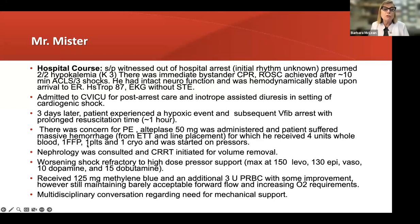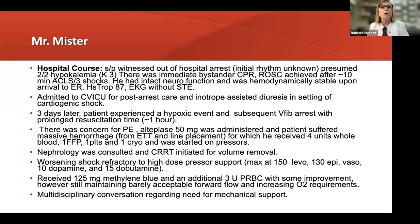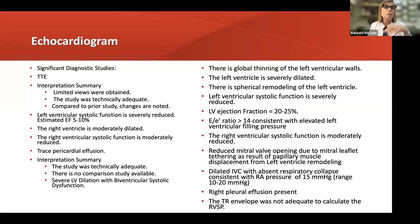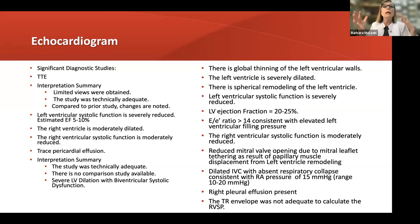There was concern for PE. He was not on vasopressors, was stable and walking around. He got alteplase, and from the alteplase he suffered a massive hemorrhage — hemorrhaging from his ET tube and all line placements. He got four units of whole blood, FFP, platelets, cryo, and was started on pressors. Pressors were titrated up to 150 of norepinephrine and 130 of epinephrine. His mean pressure was 60 and he was writing notes. Then he had worsening shock despite max levo, max epi, vasopressin, 10 of dopamine, and 15 of dobutamine. He received methylene blue — which chelates nitric oxide — and steroids.